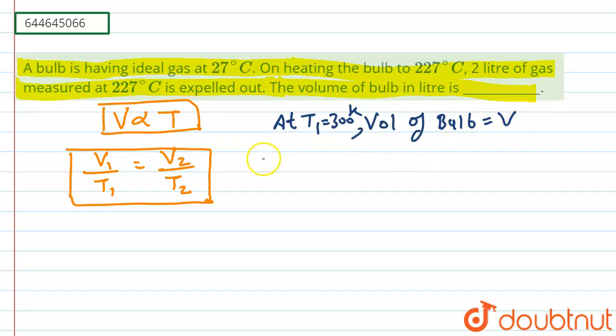And at 500 Kelvin, that is 227 degrees Celsius. So basically if we want to convert to Kelvin, we will add 273 to 227, we will get 500 Kelvin. So in this way the volume now, the whole volume of bulb becomes V plus 2 liters. How V plus 2? Because at 227 degrees Celsius, 2 liters of gas measured is expelled out of the bulb.